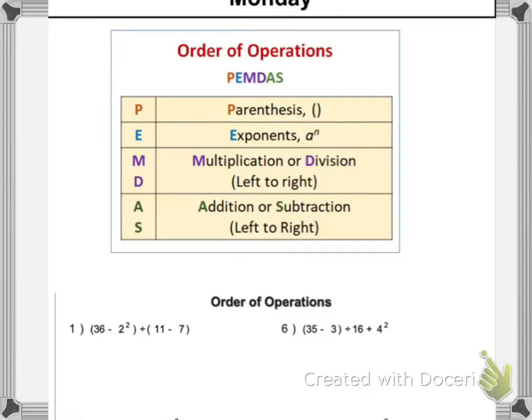All right, we're looking at order of operations, and up here we have our visual showing us what the order of operations is. We call it PEMDAS, which means we're starting with parentheses, then going to exponents, then working from left to right through multiplication or division, and then working left to right through addition or subtraction. So our first problem here,